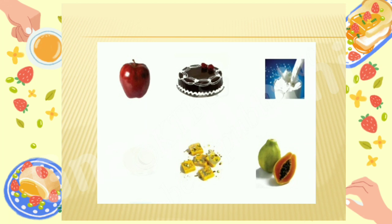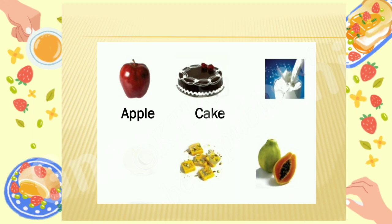Now we'll learn some names of food items given in your textbook. The first picture is apple — A P P L E, apple. The second picture is cake — C A K E, cake. Next one is milk — M I L K, milk.